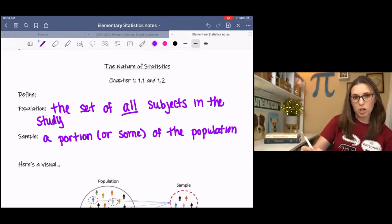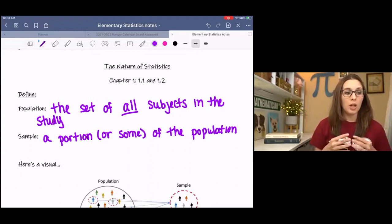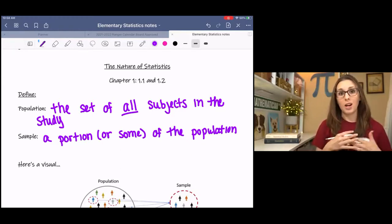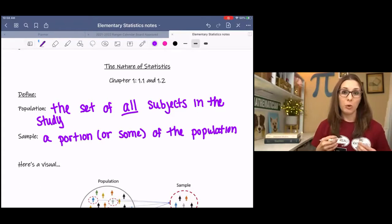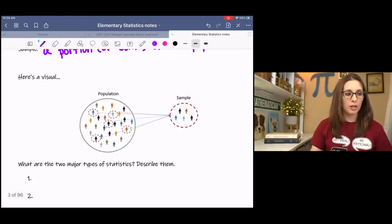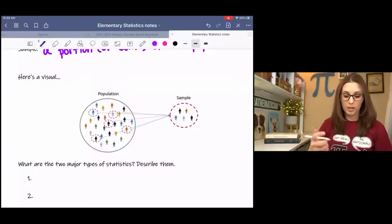Now, the sample is a portion or sum of the population. So it's a chosen group that we are studying that is pulled from the population. Now, these are important because oftentimes the population is way too big in order to study the entire thing. So instead of trying to gather data on the entire population, we pull a sample from the population that we can study instead. And here's a visual of what I am talking about here. So hopefully that can help you see kind of what's going on.